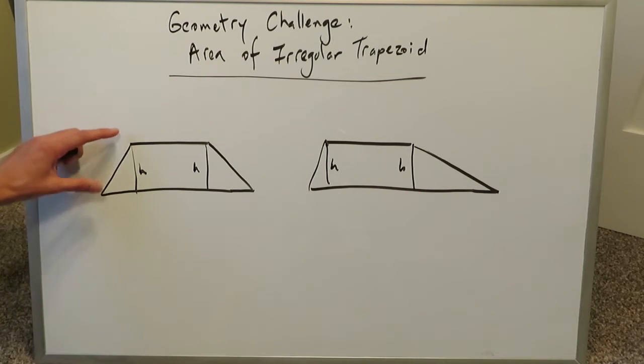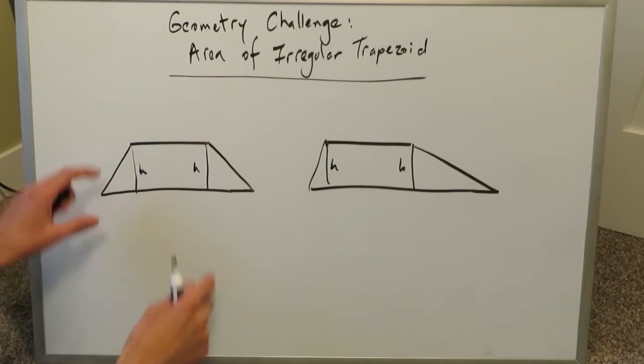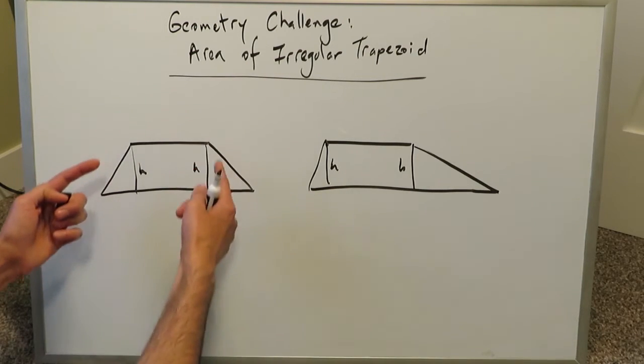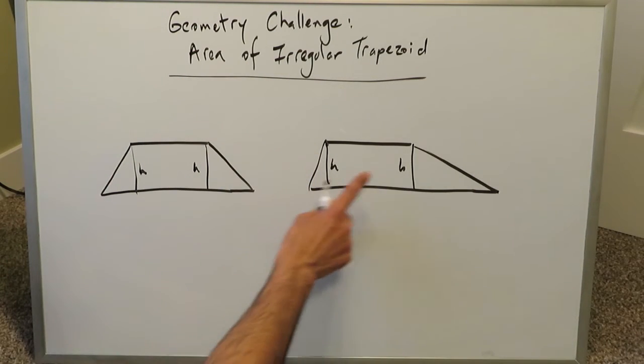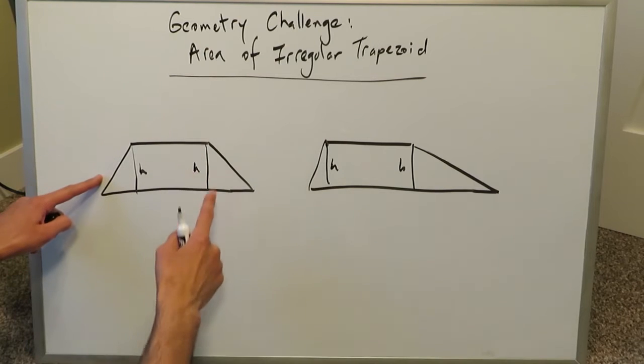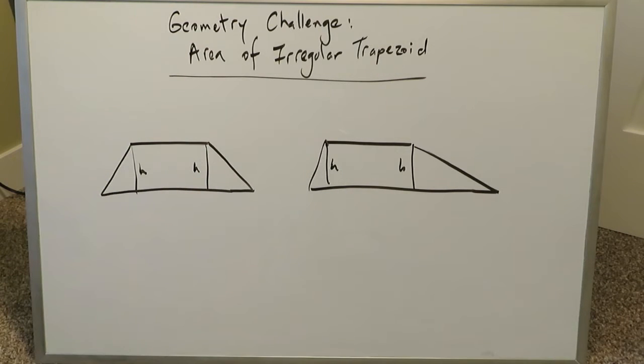The change arises here with regards to the non-parallel sides. Because these two sides are not parallel, they converge. Here's a side and here's a non-parallel side. Here's a side and here's its corresponding non-parallel side.